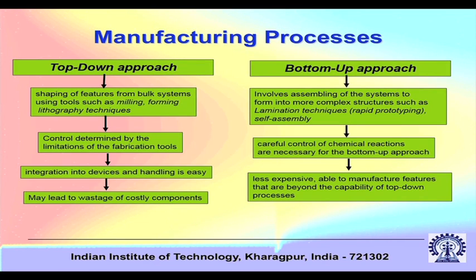When talking about a manufacturing process, we are essentially interested in two types of possibilities. One is called the top-down approach — shaping of features from bulk systems using tools such as milling, forming, lithography techniques and so on. You have a large system and you shape off some parts to get your final product. The control is determined by the limitations of the fabrication tools. Integration into devices and handling is easy, but may lead to wastage of costly components.